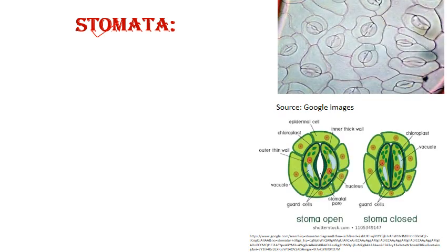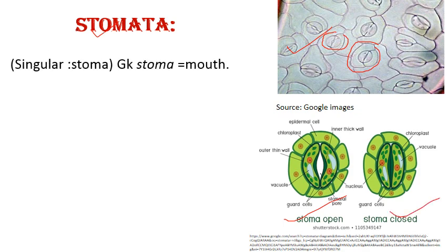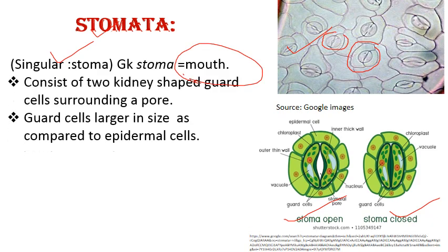Next is stomata. Stomata is the plural word; the singular is stoma. These are pore-like structures which help in gaseous exchange in plants. The word 'stoma' is Greek meaning mouth cavity or hole-like structure. Each stoma consists of two kidney-shaped guard cells, which are surrounded by smaller cells commonly known as subsidiary cells.